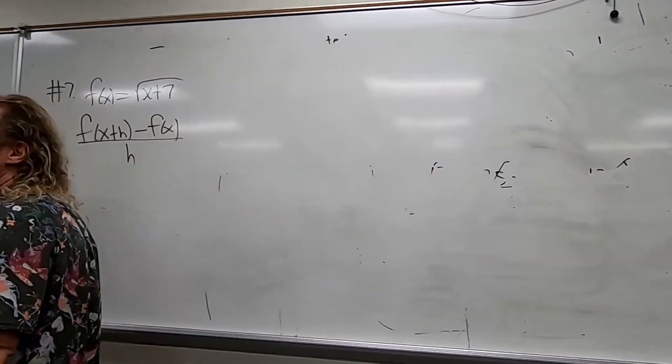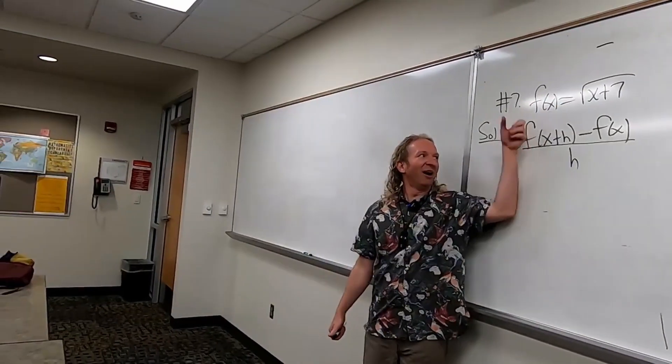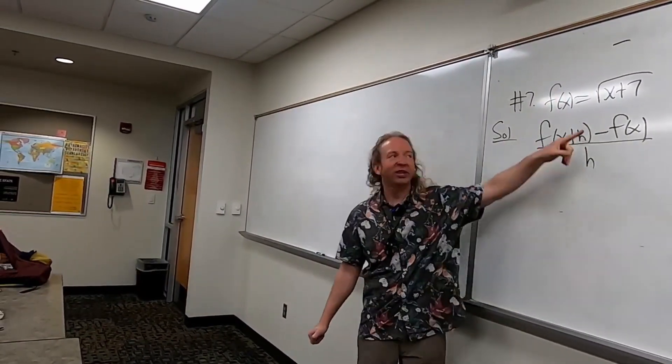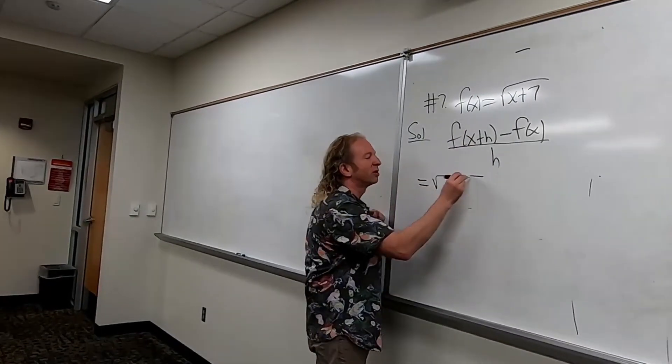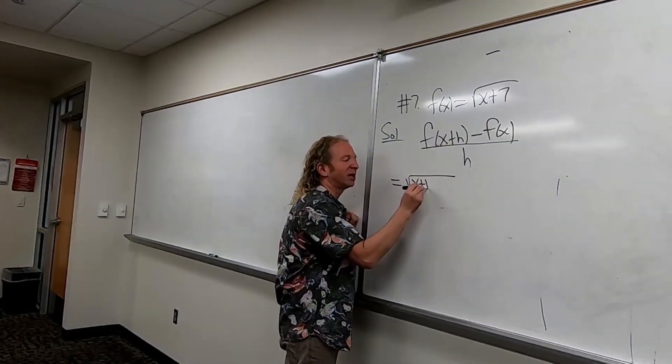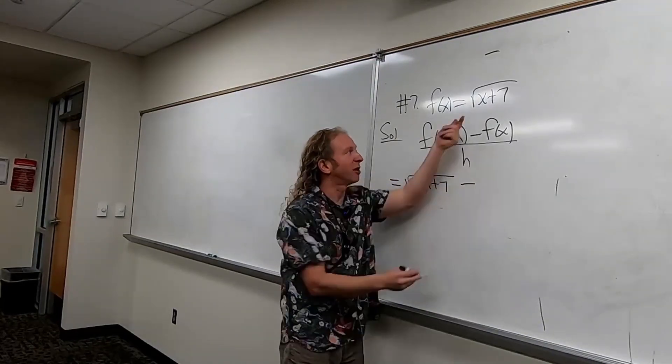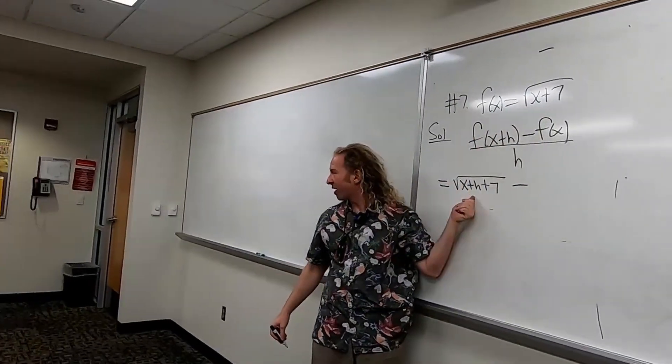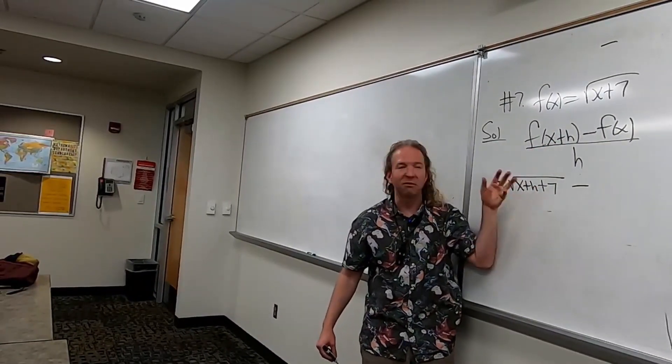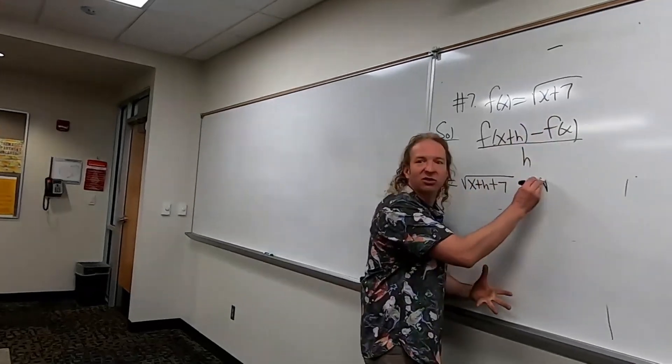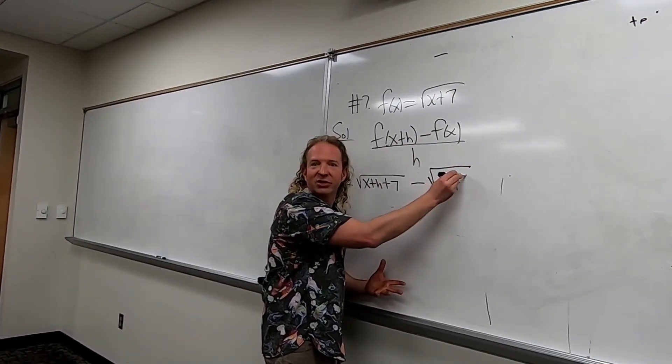First step is to write that down. I stayed out of the sun because I'll just burn. Then you replace all the x's with x plus h's. So it'll be square root of x plus h plus 7 minus square root of x plus 7. That's just replacing x with x plus h. And then f of x is square root x plus 7.